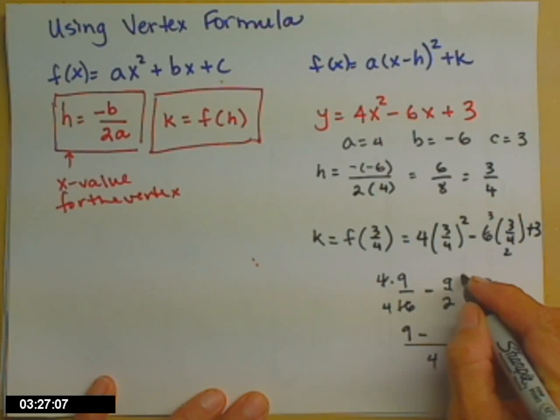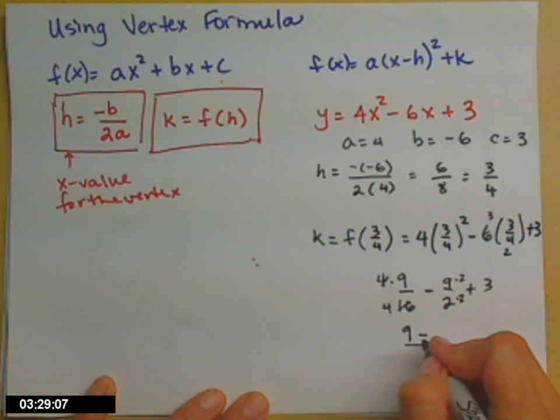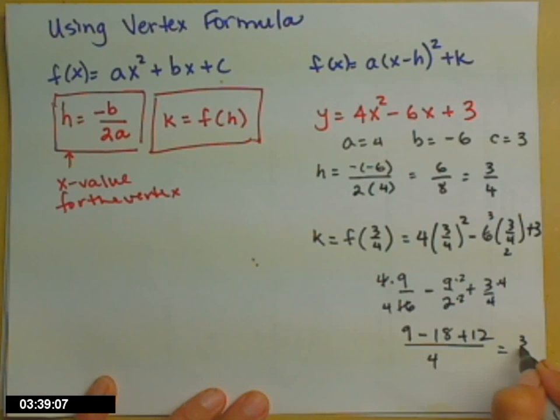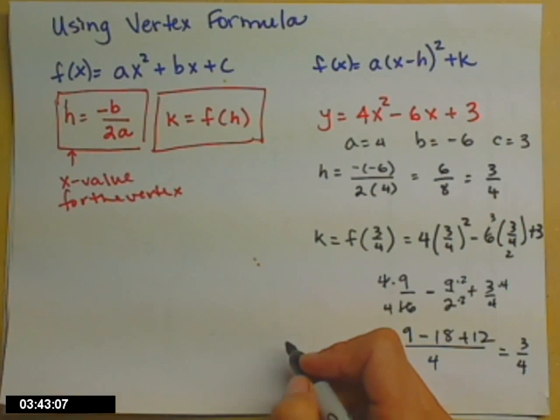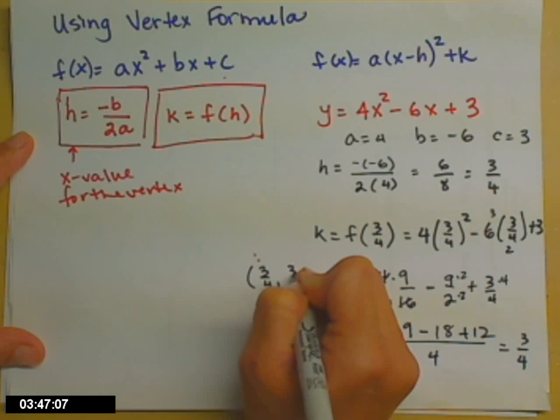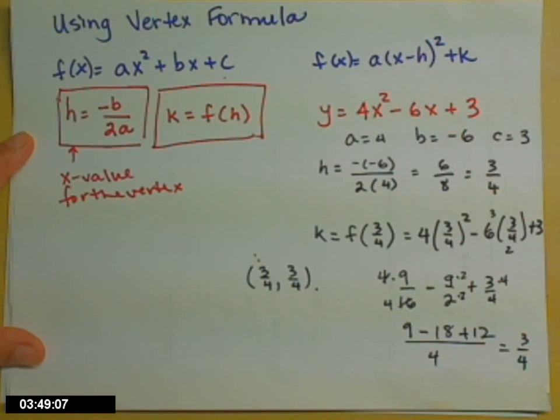4 times 9 sixteenths minus 9 halves plus 3. What kind of denominator are we looking at? 4's maybe. So, 9 minus, that needs a 2 top and bottom, 18. That one needs a 4 top and bottom, plus 12. So, we'll get negative 9 plus 12 is 3 fourths as well. That will not always happen. Just a fluke. So, the vertex for that parabola is the point 3 fourths, 3 fourths.